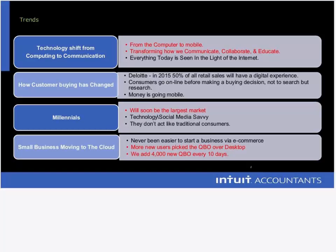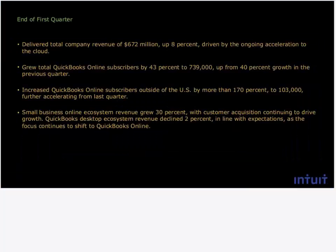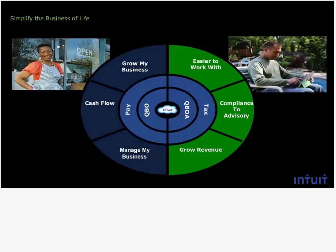A quick stat: we add about 4,000 new QBO subscriptions every 10 days, and it's global. As of the end of Q1 for Intuit, we delivered total company revenue of $672 million, up 8% from cloud revenue. We grew total QuickBooks Online subscribers by 42% from the previous quarter, increased QBO subscribers outside the U.S. by more than 170% — it's now the number two software in Australia. Small business online ecosystem revenue grew 30%, driven largely by payroll and payments, as Intuit Payroll has the biggest payroll share in the U.S.